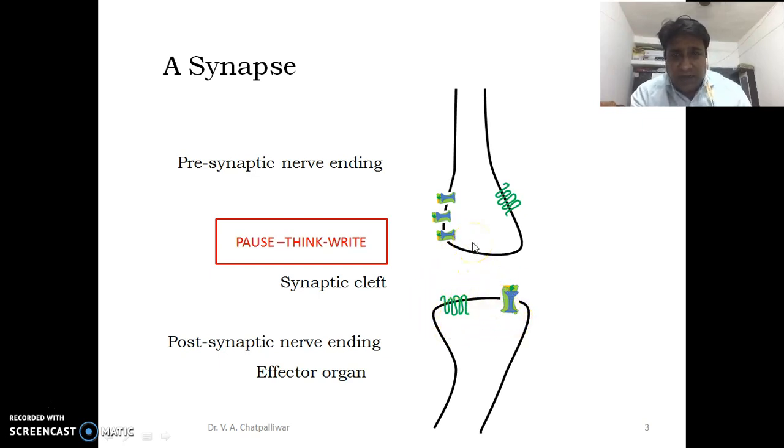The neurotransmitters are released into the synaptic cleft as a response of arrival of a signal. Corresponding signal triggers the release of the neurotransmitter into the synaptic cleft. They have to travel and interact with these receptors.